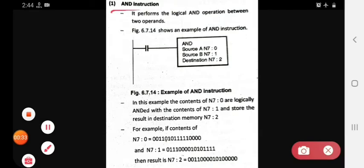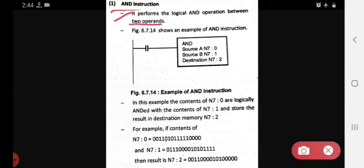So see one by one, the first one is AND instruction. In that AND instruction we see the first point: it performs the logical AND operation between two operands. The logical operation will have two operands. So this is an example of AND instruction.